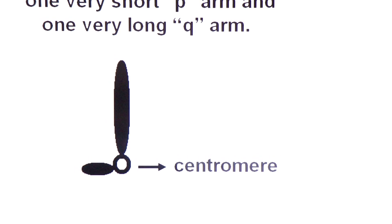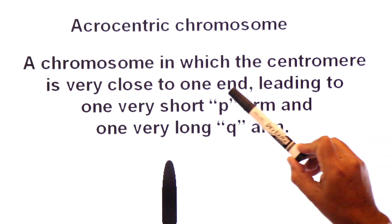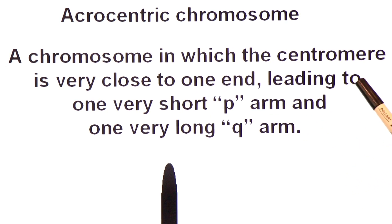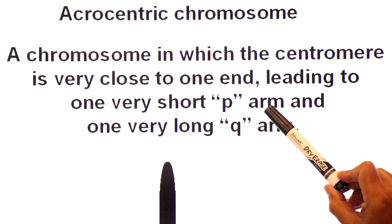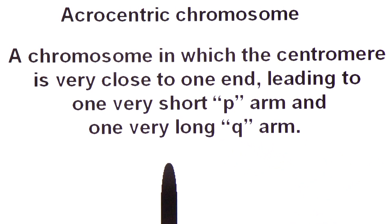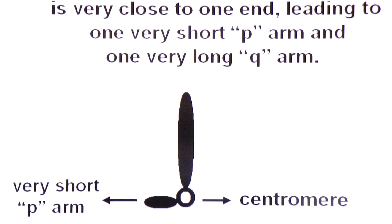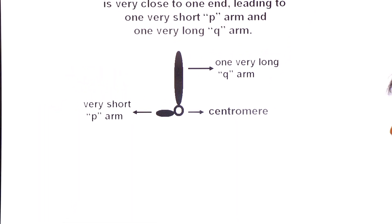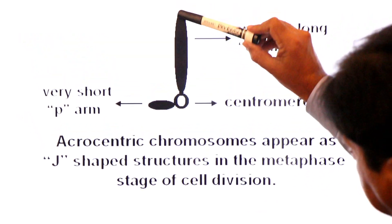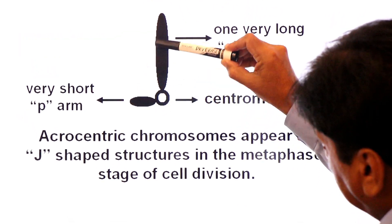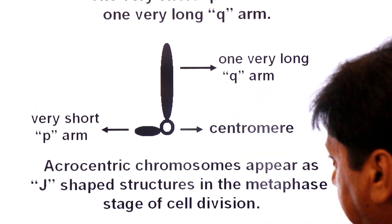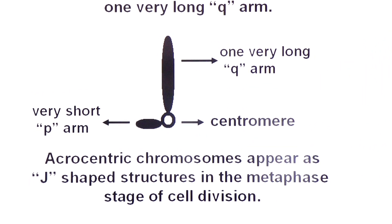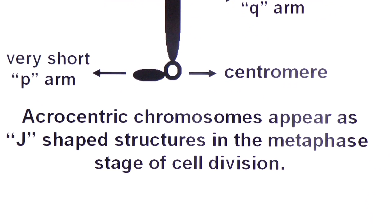In the acrocentric chromosome, the centromere is highly displaced from the center and is located near to one end of the chromosome. This leads to one very short arm known as the p-arm and one very long arm known as the q-arm. The acrocentric chromosome appears as a J-shaped structure in the metaphase stage of cell division.